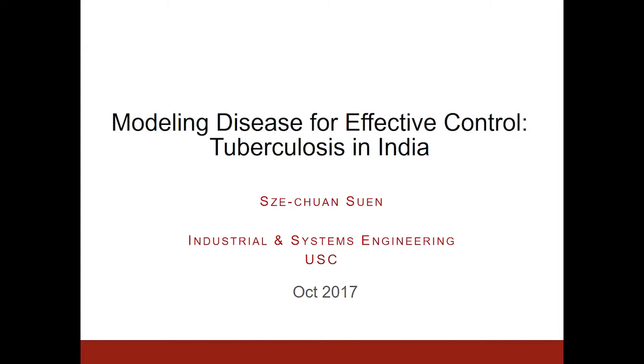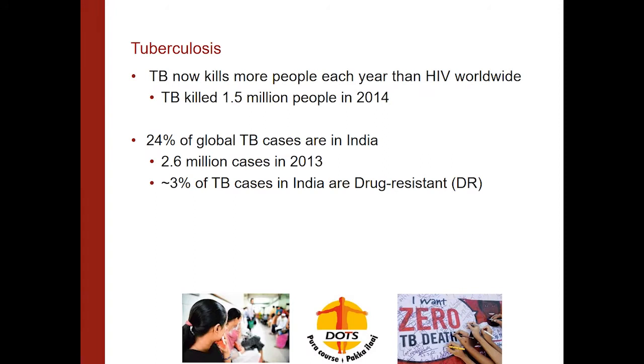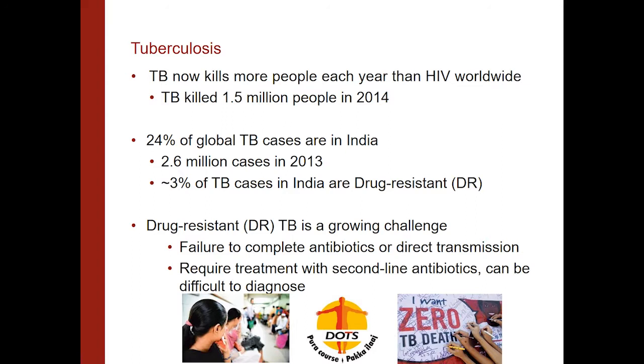TB now kills more people than HIV worldwide, which is surprising to a lot of people. Most of my work is focused on India in the context of Indian tuberculosis because about a quarter of the world's cases reside here. Besides many of the drug-sensitive or DS cases in TB, one of the problems facing India is a growing number of drug-resistant tuberculosis cases, of which about 3% of all cases are. Drug-resistant TB happens when patients undergo antibiotic therapy but don't finish their regimens, or it can also occur because of direct transmission. I'll talk about both of those pathways today.